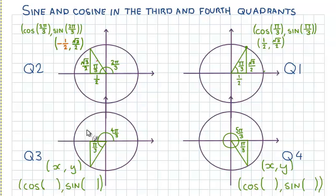I want you to write in what you think the x and the y coordinate are for each point in absolute terms. So the x coordinate will either be plus or minus 1/2 and the y coordinate will be plus or minus √3/2. I also want you to write what the x and y coordinates are in terms of cos and sine. And when you're finished with that, restart the video and we'll write them in.